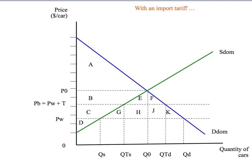Now let's look at the case with an import tariff. Once the import tariff T is in place, sellers in Australia can sell for PW plus T and buyers have to pay PW plus T for cars. Producer surplus is now C plus D — producers receive price PW plus T and sell QTS cars. Consumers face price PW plus T and buy QTD cars, so their consumer surplus is areas A, B, E, and F. But there's one more group to consider: the government. The government levies a tax of T dollars on every imported car. The tax per car is given by the height T, and the number of imported cars is the difference between domestic demand and domestic supply. So the tax revenue for the government is the pink shaded area H plus J — tax times quantity of imports.